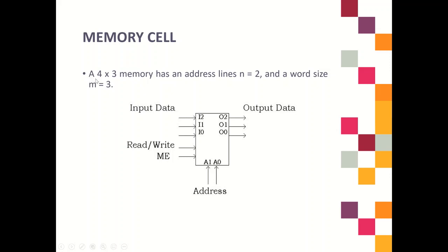For example, a 4×3 memory has an address line of 2, because you need to convert to the format 2^N × M. So 4 equals 2^2, giving N=2, meaning you have 2 address lines. The word size equals 3.